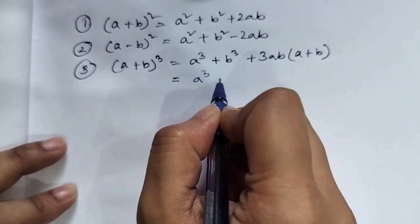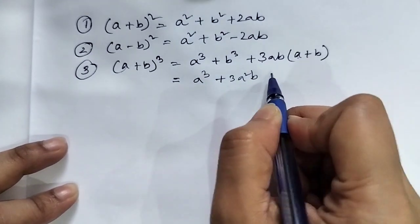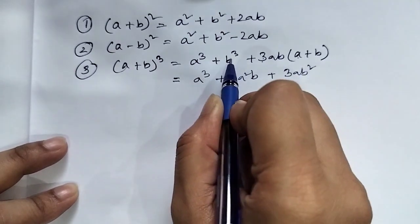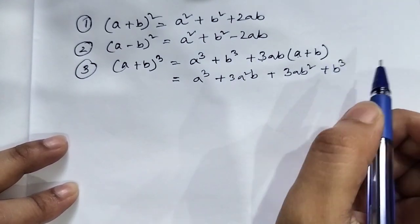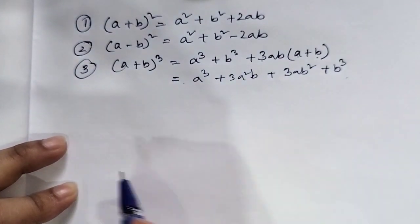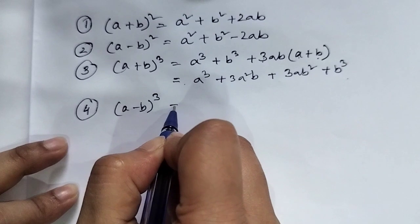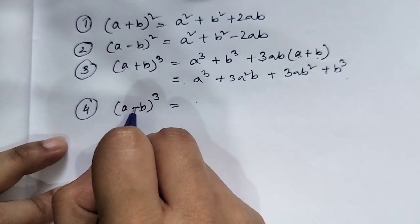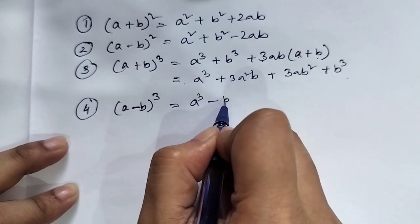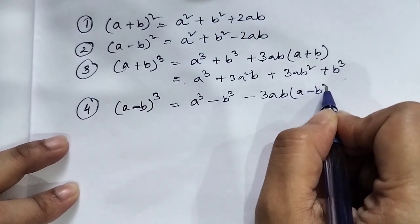a plus b whole cube formula. And the a minus b formula: a cube minus b cube minus 3ab(a minus b).